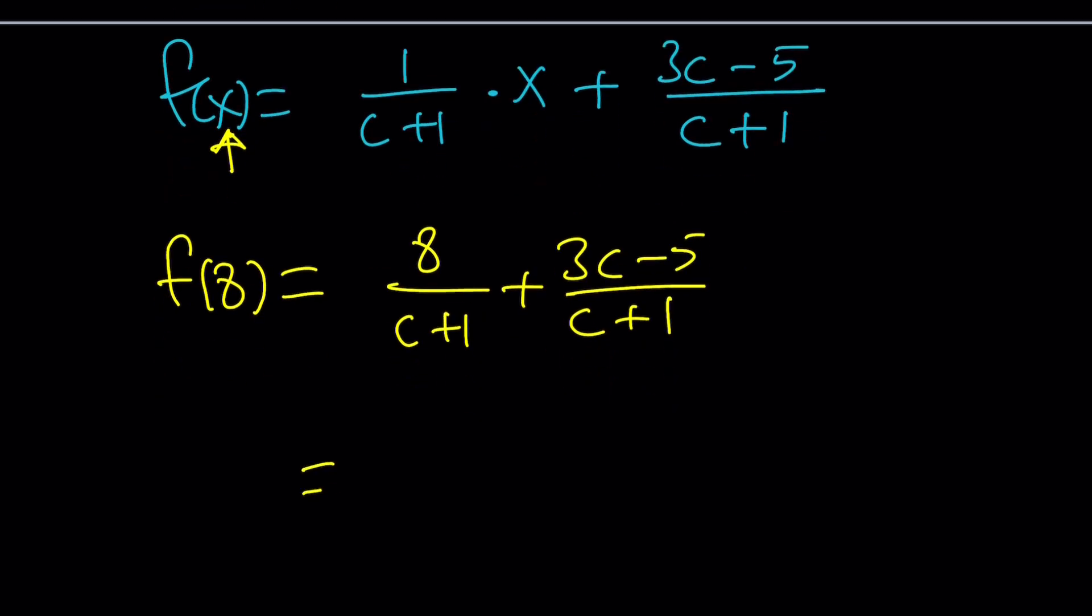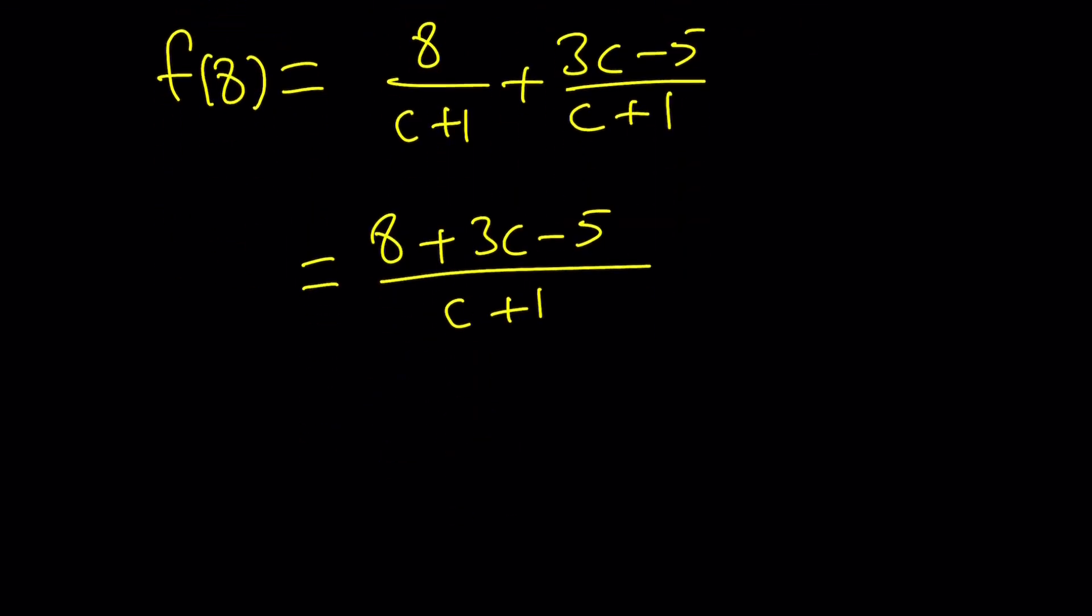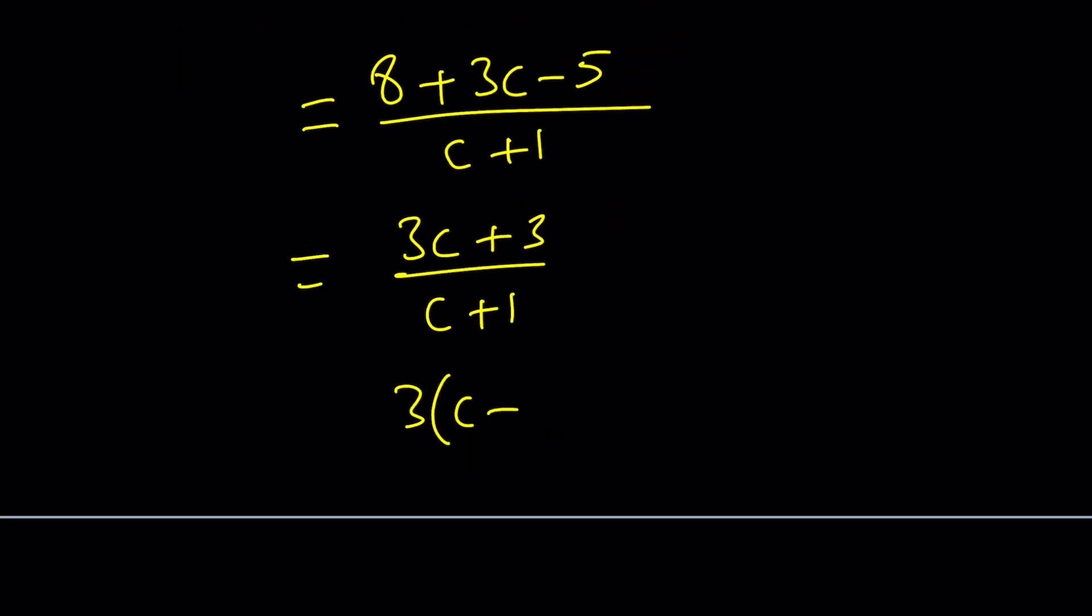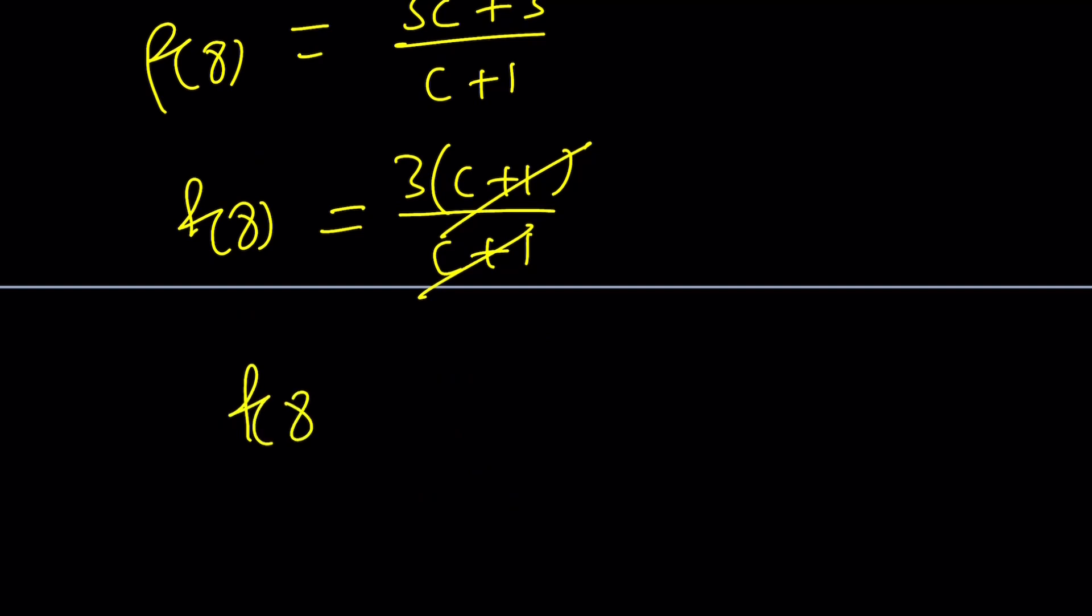Notice that we have a common denominator. That's awesome. So add the numerators. And notice that when you add the numerators, you get 3c + 3. And that can be factored out as 3(c + 1). And notice that if c does not equal -1, hopefully it isn't, it can be cancelled out. When the c + 1 cancels out, we end up with f(8) = 3, which is what we were looking for.